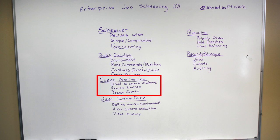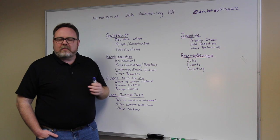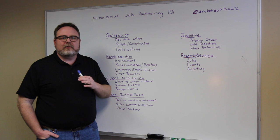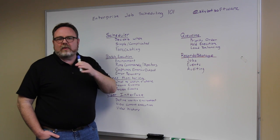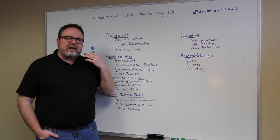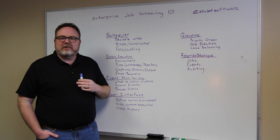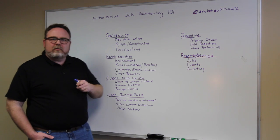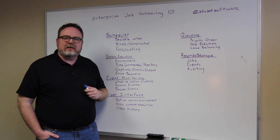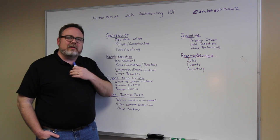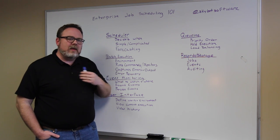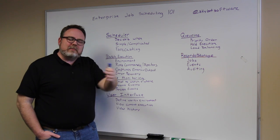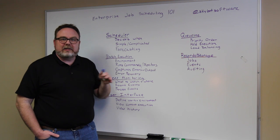The third thing we're talking about today is event monitoring. Event monitoring is kind of a newer concept. Basically, you're going to be telling your enterprise job scheduler that you want to watch for a certain condition, either on a computer or in the network. And when it sees that particular condition, it's going to react to that and do things. It's kind of what to watch and where to watch for it. Recording those events is another good historical thing — you want to know if a batch job gets kicked off because of an event, and be able to go back and look at the event that actually kicked it off.